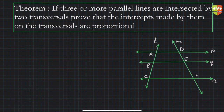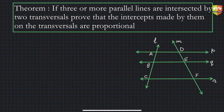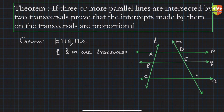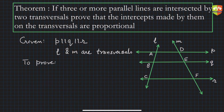Hello friends, welcome again to another session on problem solving and proving theorems. In this theorem, it's given that there are three or more parallel lines intersected by two transversals. We have to prove that intercepts made by them on the transversals are proportional. Given: P is parallel to Q is parallel to R, and L and M are transversals. To prove: AB/BC = DE/EF.